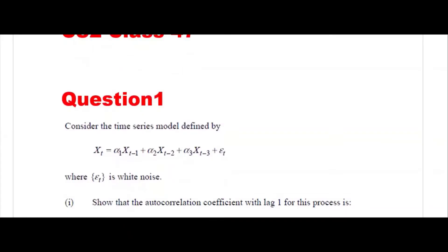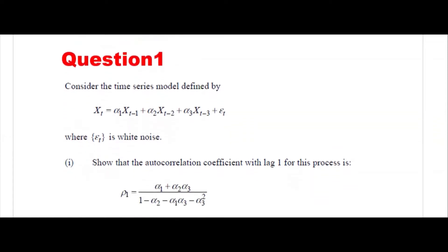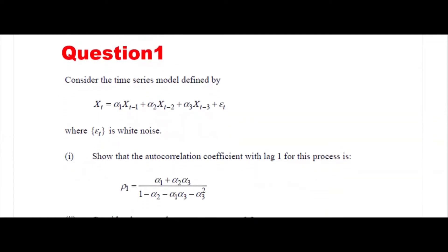Consider a time series model defined by this. The key difference from other problems we've already solved is that here you need to find the autocorrelation rho 1, but alpha 1, alpha 2, alpha 3 are not given.